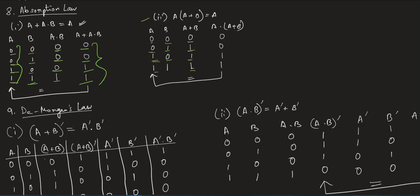Now multiplying A into (A plus B): 0·0=0, 0·1=0, 1·1=1, and 1·1=1. The contents of A into (A plus B) are the same as A, which is why we write A into whole bracket (A plus B) equals A.